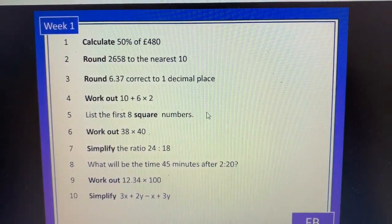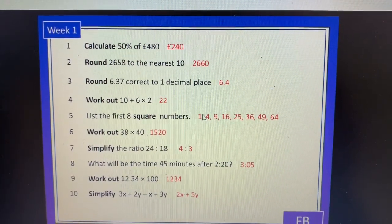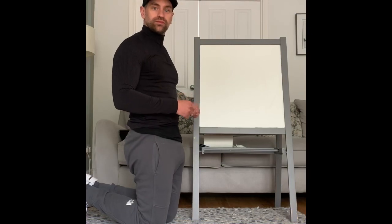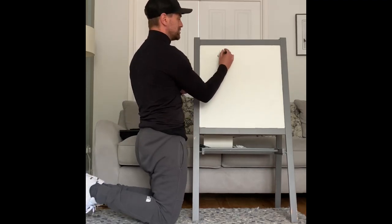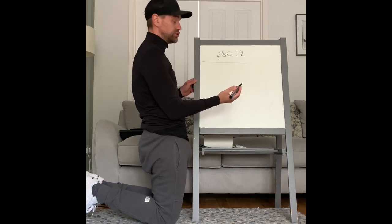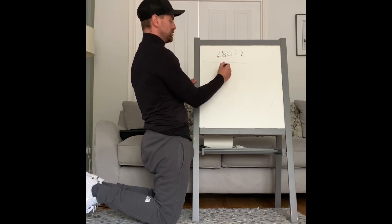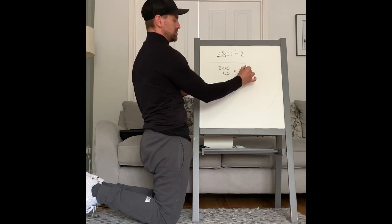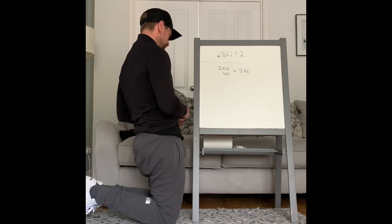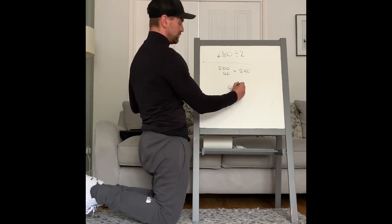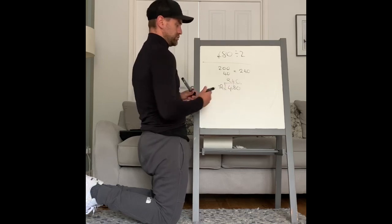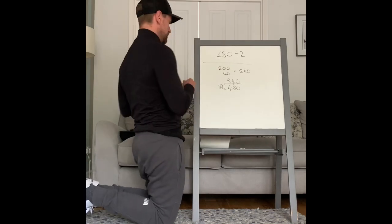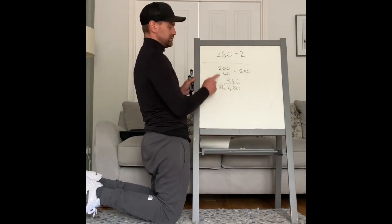Questions coming up now - go. Question one was 50% of 480. Well, 50% is a half, so basically all we need to do is 480 divided by 2. What's half of 400? 200. What's half of 80? 40. So your answer would be 240. Or you could have done it as a bus stop: 480 divided by 2 - 2s into 4 go 2, 2s into 8 go 4, 2s into 0 go 0 - 240. Same answer, two different ways: common sense or bus stop method.